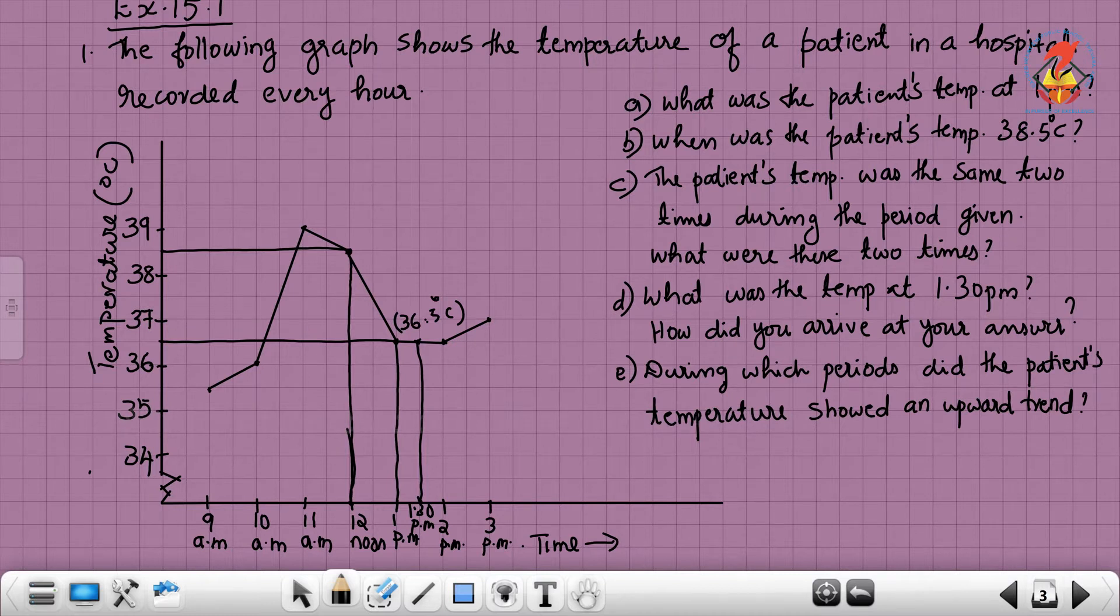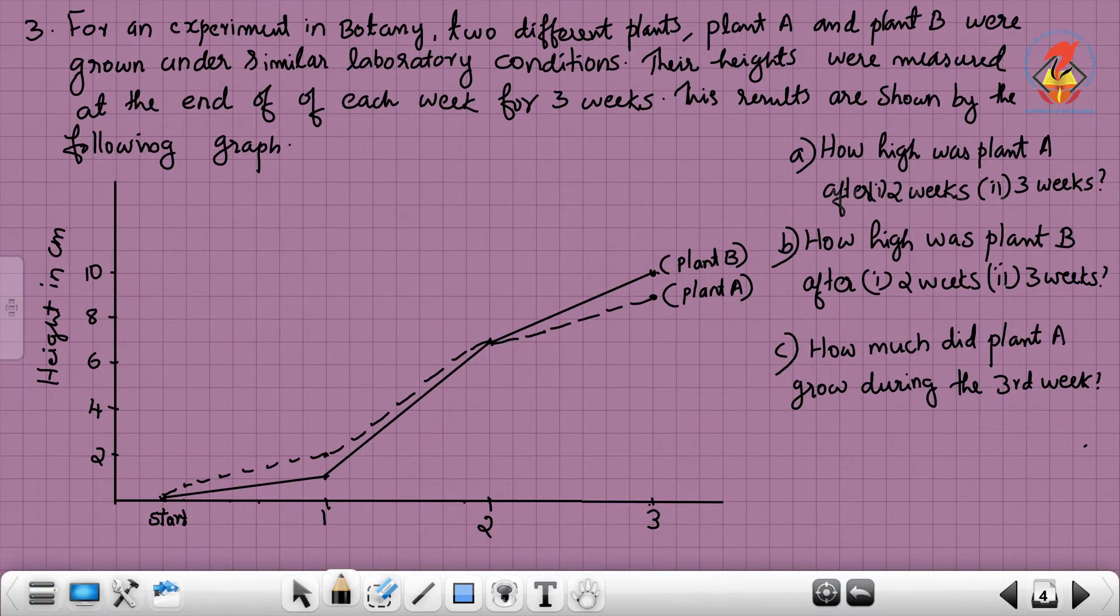During which periods did the patient's temperature show an upward trend? Upward trend means here, 9 AM to 10 AM, the temperature increases. Next time, 10 AM to 11 AM, also the temperature increases. Next day, 2 PM to 3 PM, also temperature increases. The temperature showed upward trend during these periods.